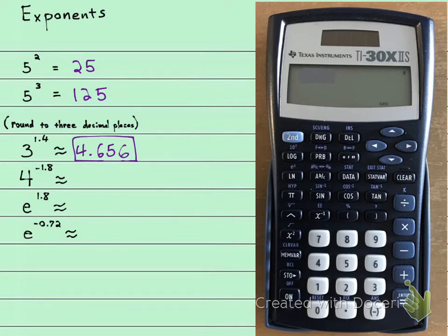Now let's look at an exponent that has a negative in it. And that's right here. We have 4 to the power of negative 1.8. Very important that you're going to use the negative button down here, and not the minus button right here.